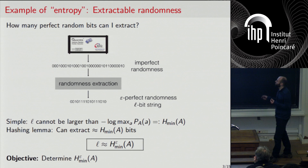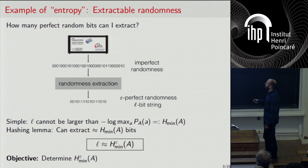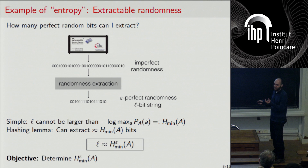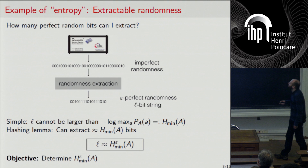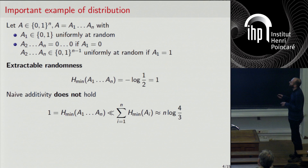Given such a device, we would like to determine this quantity, because it exactly characterizes the number of bits of extractable randomness. The objective is, by understanding the procedure to generate one of these bits, to be able to say something about the entropy of the whole bit string. Before starting, let's look at a few examples of classical distributions to convince ourselves that naive additivity does not hold.